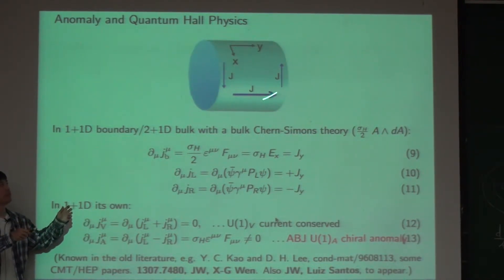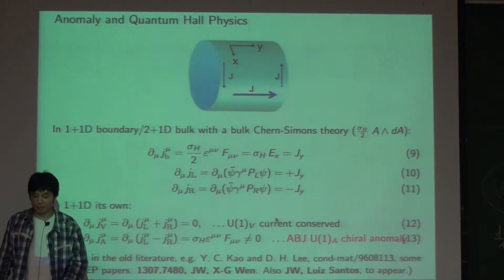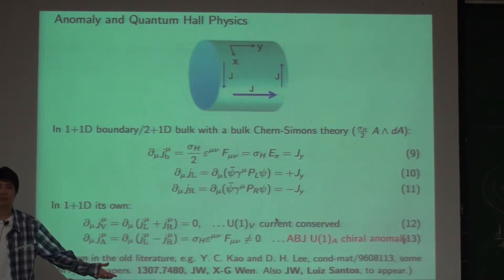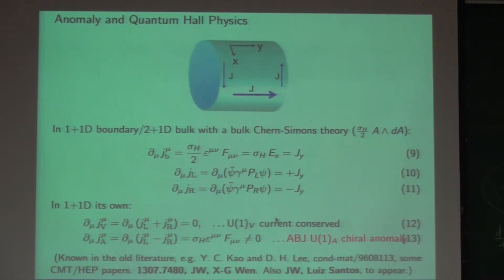Everything is conserved. It is like two countries connected economically: if one is losing money, the other gains. Or like moving money from one pocket to the other. If you combine the left and right currents, J_L + J_R, the vector current is conserved. But if you define the axial current J_L - J_R, that current is not conserved — and that is exactly the physics of the quantum anomaly, directly related to one-loop calculations in particle physics.